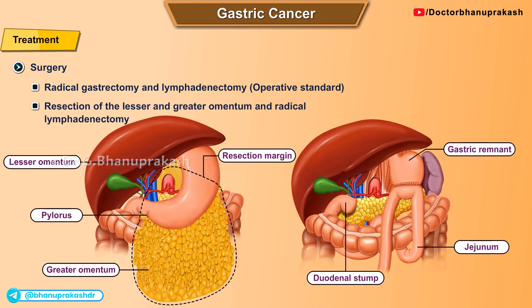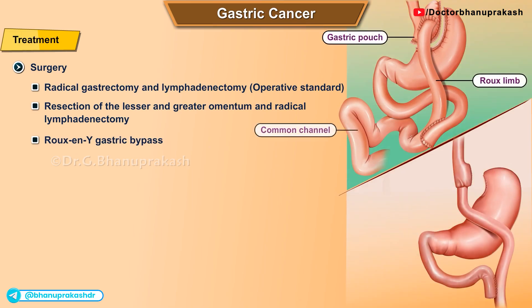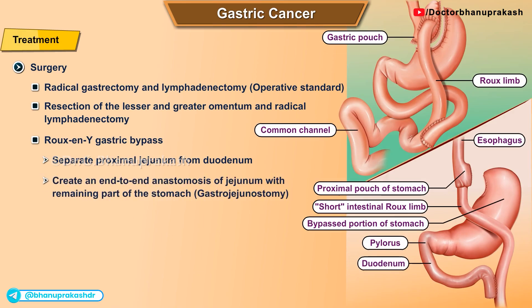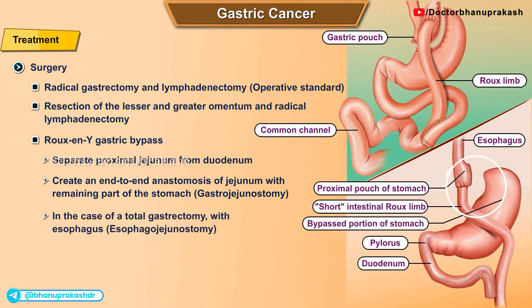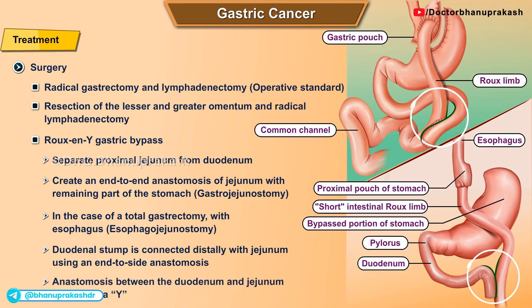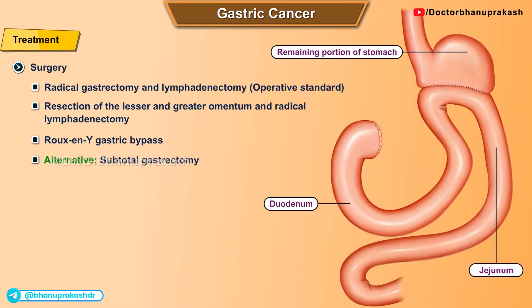Surgery involves radical gastrectomy with lymphadenectomy, including resection of the lesser and greater omentum. Roux-en-Y reconstruction involves separating the proximal jejunum from the duodenum and creating an end-to-end anastomosis of the jejunum with the remaining stomach — known as gastrojejunostomy — or, in the case of total gastrectomy, with the esophagus (esophagojejunostomy). The duodenal stump is connected distally to the jejunum via end-to-end anastomosis, creating a Y-shaped configuration. An alternative approach is subtotal gastrectomy.